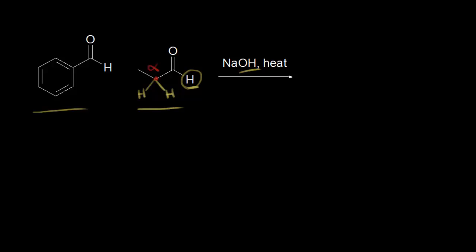Now let's look at benzaldehyde. This carbon is next to a carbonyl; however, it already has four bonds to it, so it doesn't have an alpha proton. Benzaldehyde does not have an alpha proton, so we don't need to worry about it forming an enolate anion. Therefore, the enolate anion is going to form from propanal.